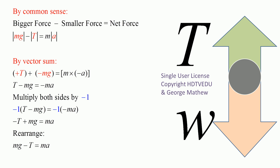From a common sense point of view, the gravitational force is greater than tension because the length of the arrow for gravitational force was drawn greater than the tension arrow. So the bigger force minus the smaller force equals net force. Net force is always mass times acceleration, so gravitational force minus tension equals net force.